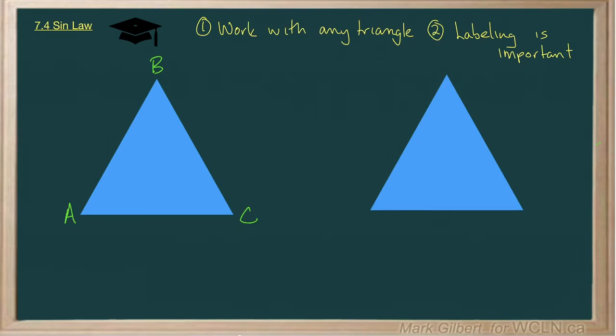Now, the side across from A here is lowercase a. The side across from C is lowercase c and the side across from B is lowercase b. I think you can realize that the letters really aren't that important, but we usually label it that way to avoid confusion.